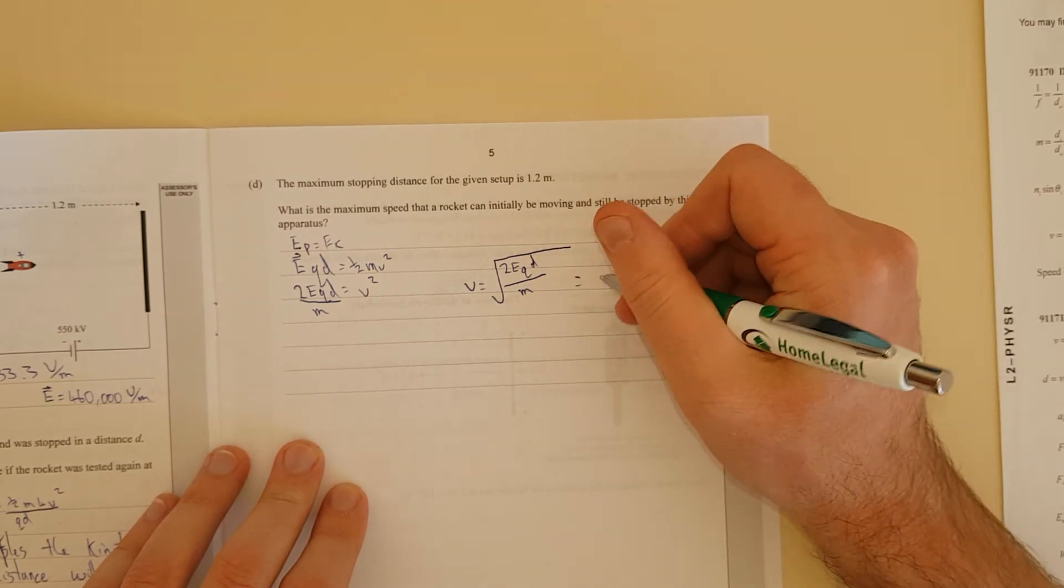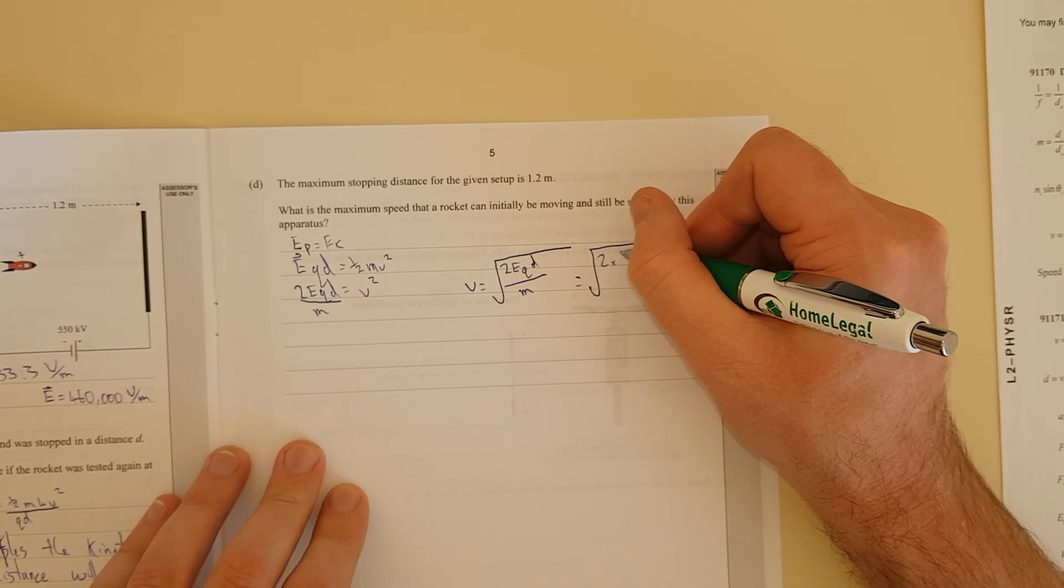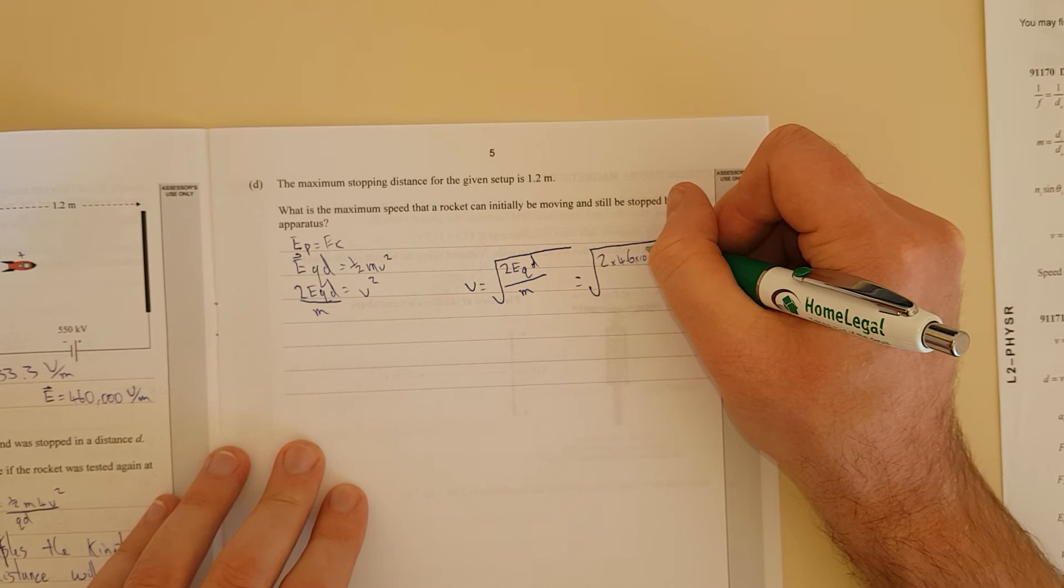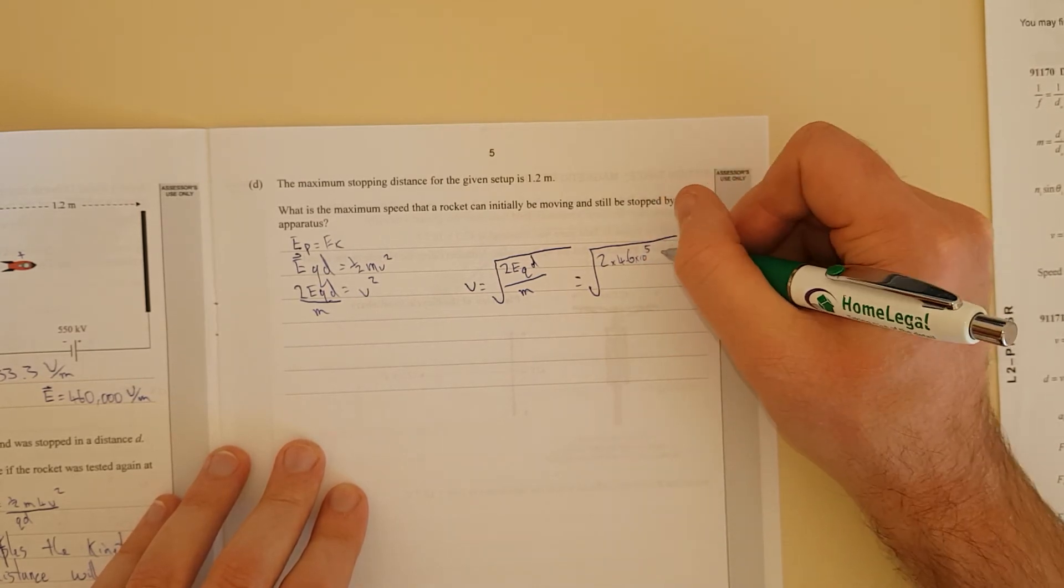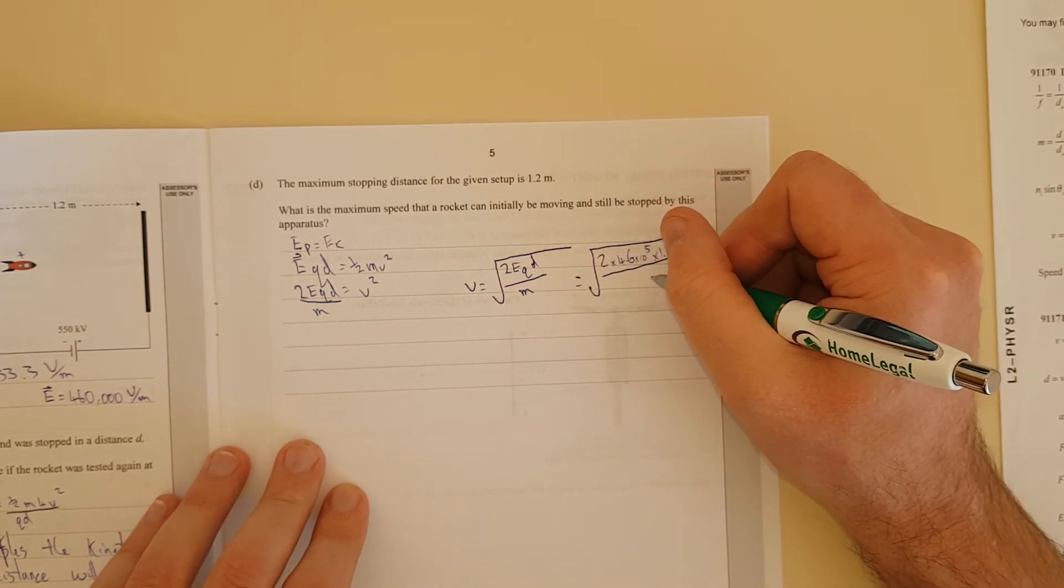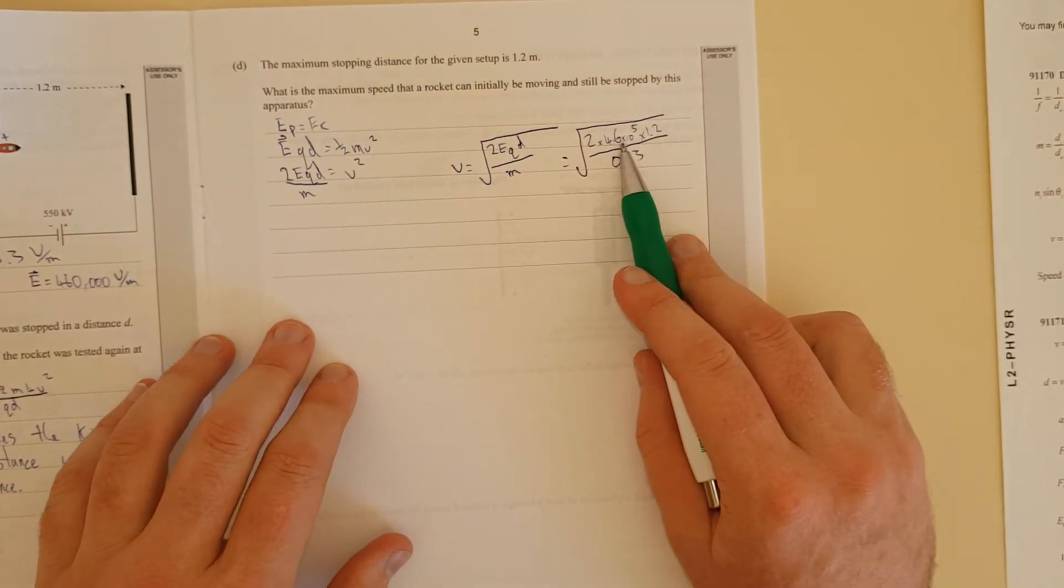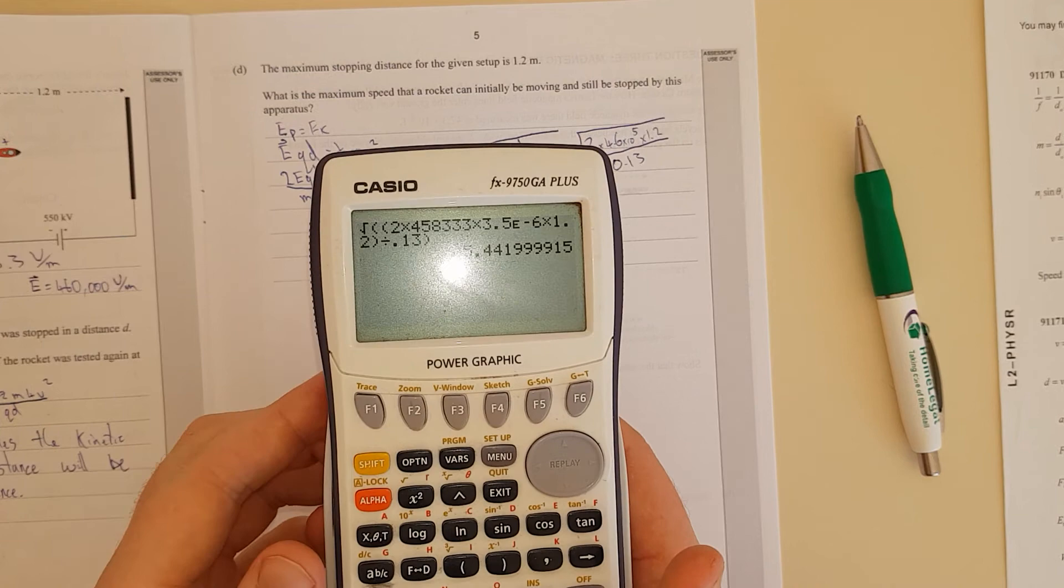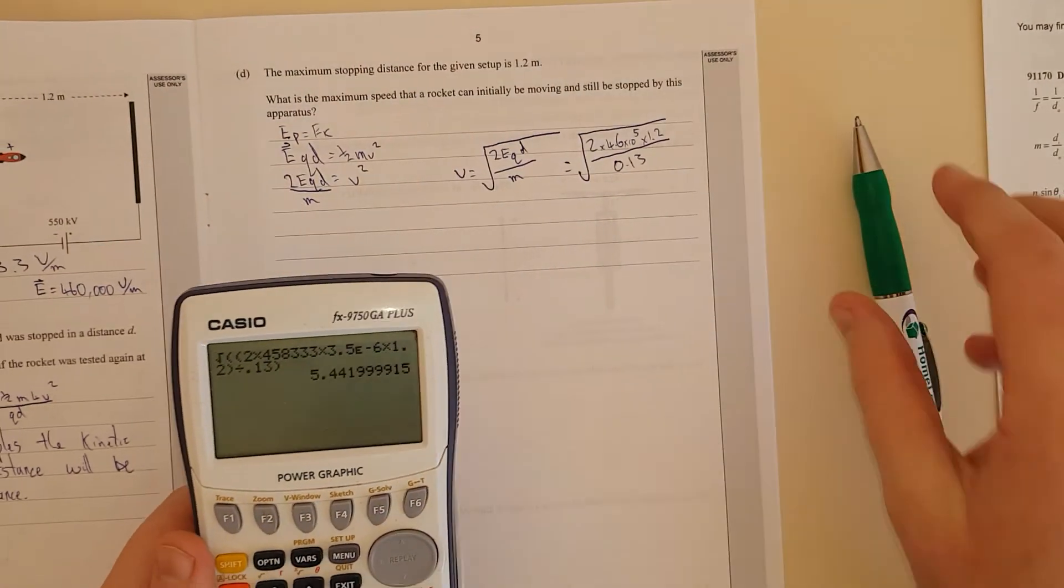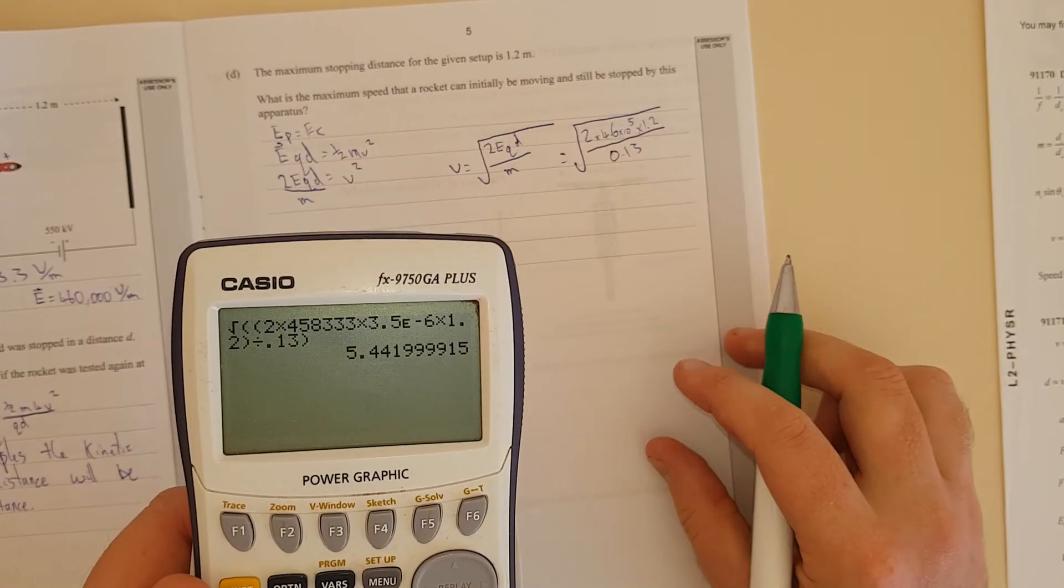The maximum stopping distance is 1.2, so that's the distance we're going to chuck in. And that's just going to be equal to square root 2 times the electric field 4.6 times 10 to the 5 times 1.2 divided by the mass 0.13. When I do this on my calculator, I'm going to use a previous number. And as you can see, I've got 5.4419. I used the full number in my calculation, but I just checked the rounded number because I'm lazy. You should always use the full unrounded numbers in your answer.